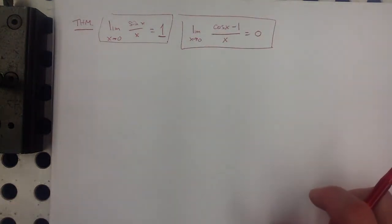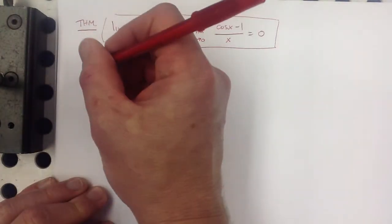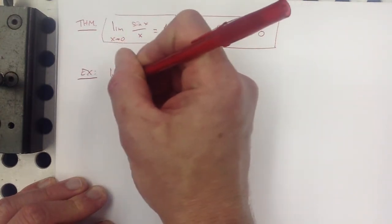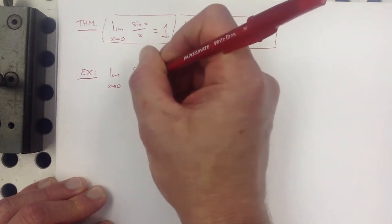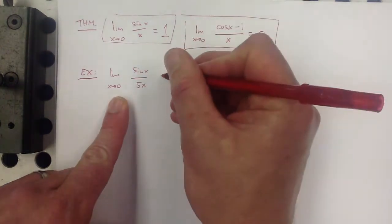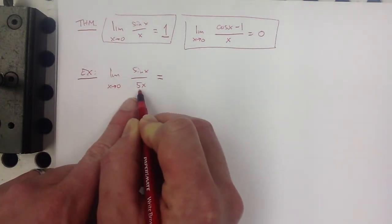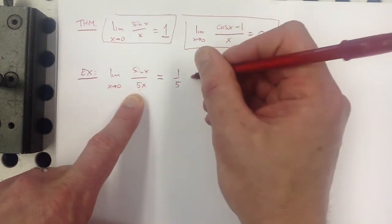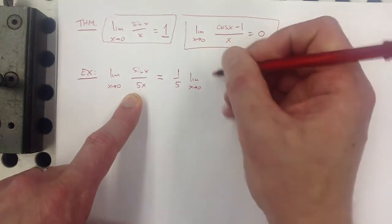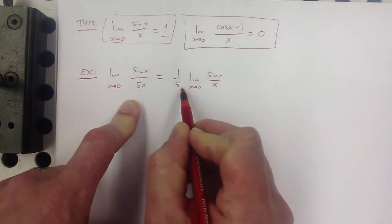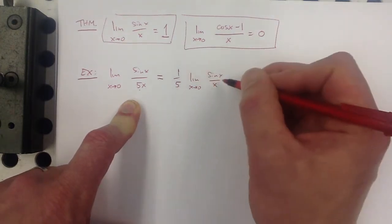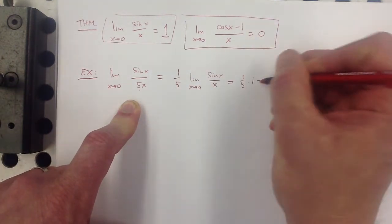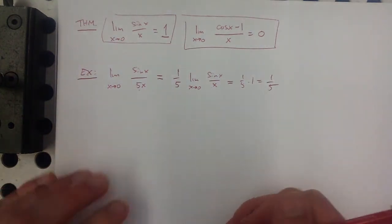The rest of this section is really just using these two results to get other results. For example: the limit as x approaches 0 of sine x over 5x. Since a constant multiple can be brought outside, that's 1/5 times the limit of sine x over x, which equals 1/5 times 1, or just 1/5.